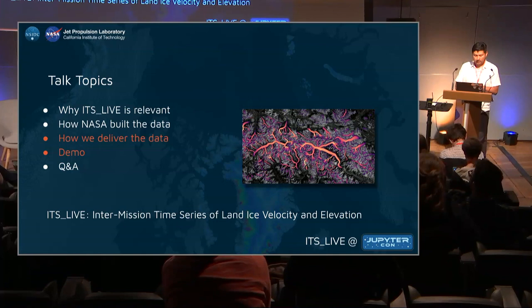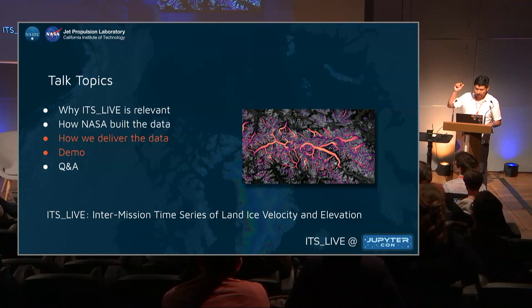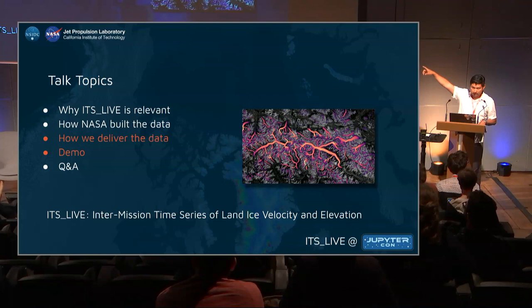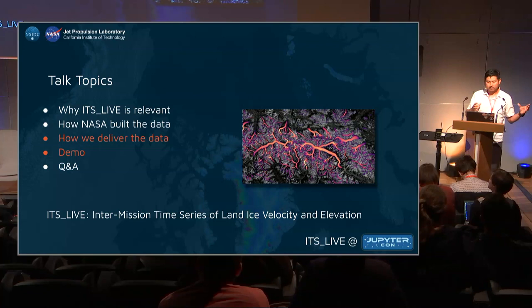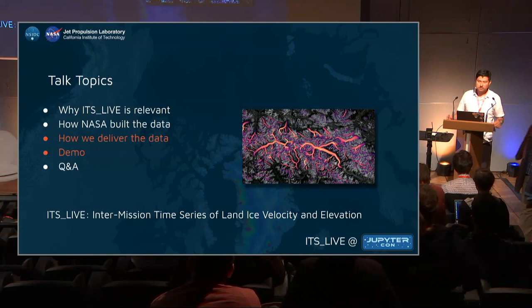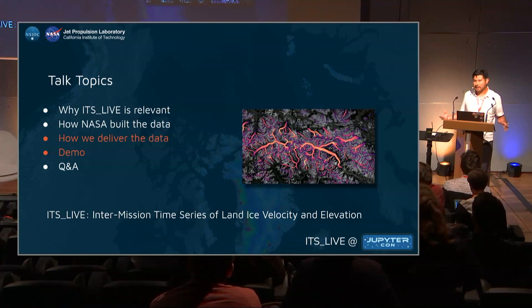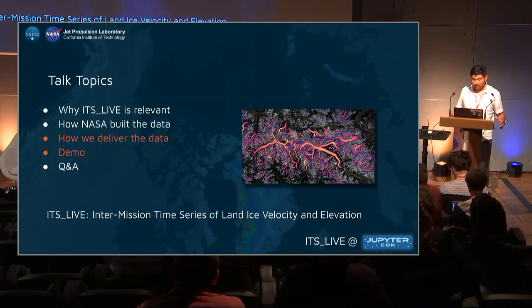The acronym, which is a long one, is ITS_LIVE: Intermission Time Series of Land, Ice, Velocity, and Elevation. What you see there is the velocity of movement of glaciers in the Himalayas in India. When you map at global scale and in years, glaciers and other earth systems are not static — they move, and you can see in time-lapses how they move and interact.